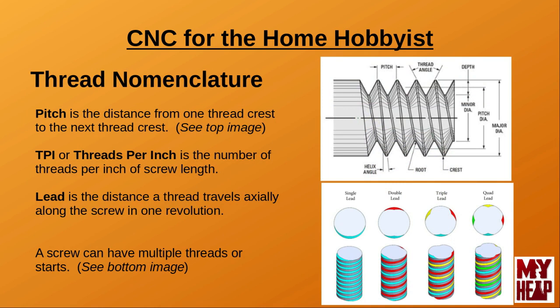There is a certain vernacular associated with threads that you should familiarize yourself with. For our needs, we only need to learn three of them, and these will be useful in helping us to configure LinuxCNC. Pitch is the distance between the crest of one thread to the crest of the next thread in line. For metric threads, pitch is measured in millimeters, and for imperial threads, it's measured in inches.